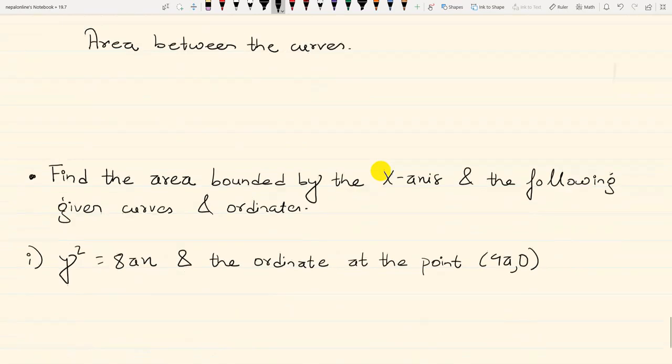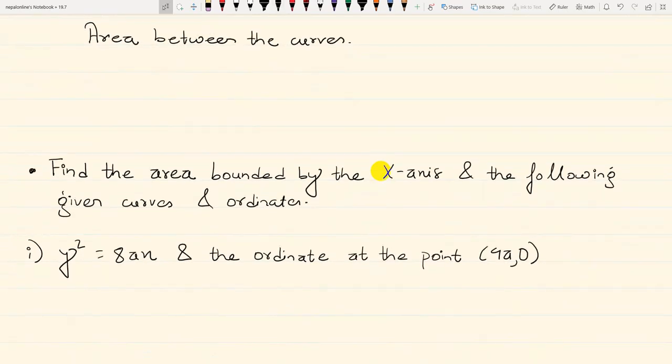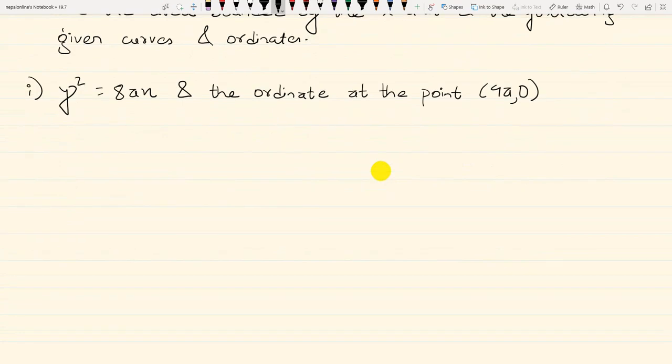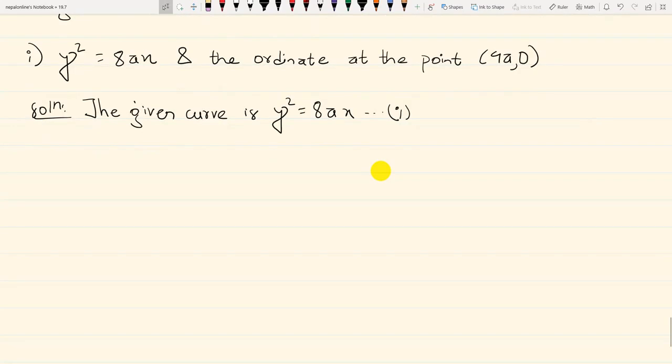In this video, we will find the area bounded by the x-axis and the following given curves and ordinates. The first equation is y² is equal to 8ax. Let's see if point (0,0) is satisfied.